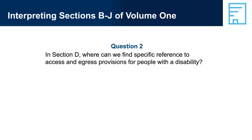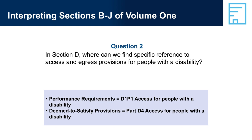Question 2: In Section D, where can we find specific reference to access and egress provisions for people with a disability? Performance requirements equal D1P1, access for people with a disability. Deemed-to-satisfy provisions equal Part D4, access for people with a disability.